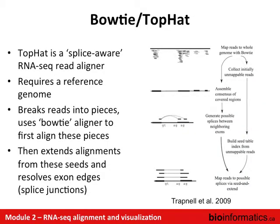The aligner we're going to use is called Bowtie TopHat. It's one of these splice-aware aligners and requires a reference genome. The way it works is it breaks reads into little pieces, uses the Bowtie aligner to align the short pieces, then extends those alignments and resolves the exon edges or splice junctions.